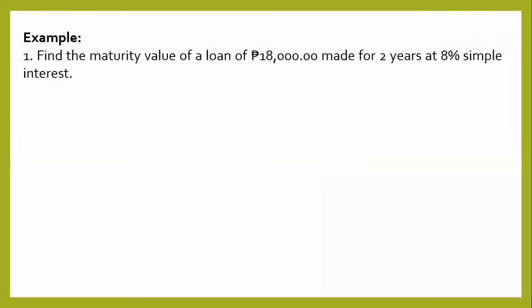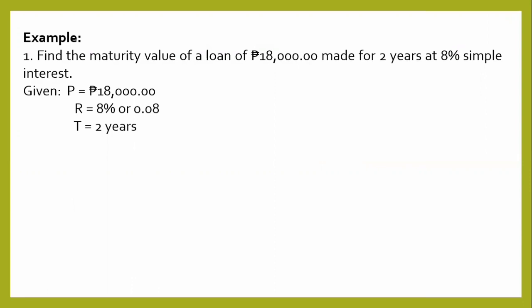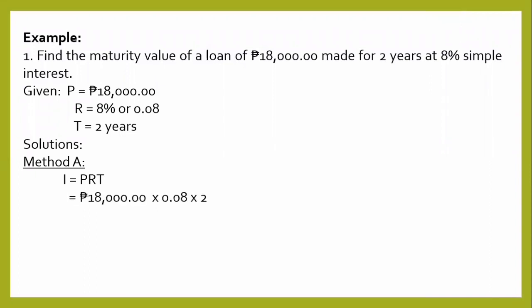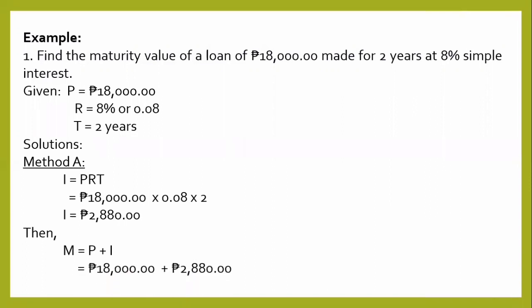Example number one: Find the maturity value of a loan of 18,000 pesos made for two years at 8% simple interest. Given: P equals 18,000 pesos; R equals 8% or 0.08; time is two years. Method A, step one: I equals PRT — substituting 18,000 times 0.08 times 2 gives I equal to 2,880 pesos. Step two: M equals P plus I — substituting 18,000 plus 2,880 gives a maturity value of 20,880 pesos.